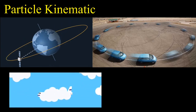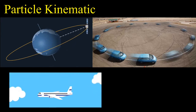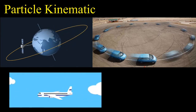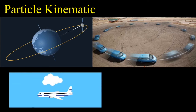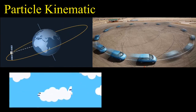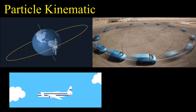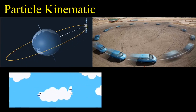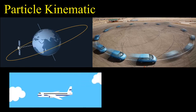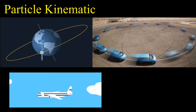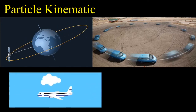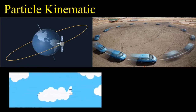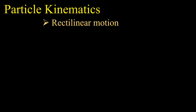For example, the dimension of a satellite is very small compared to the radius of its orbit, so we can model it as a particle. In the case of a car, the rotation of the wheels is irrelevant to the motion of the car as a single entity, so we model it as a particle. Similarly, an airplane traveling in a straight line with no rotation can also be modeled as a particle.